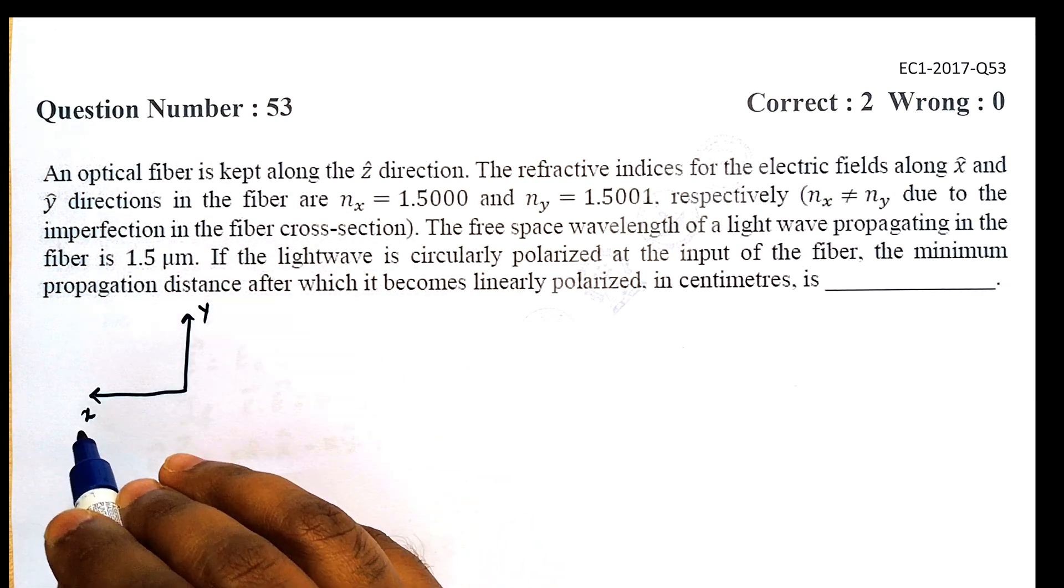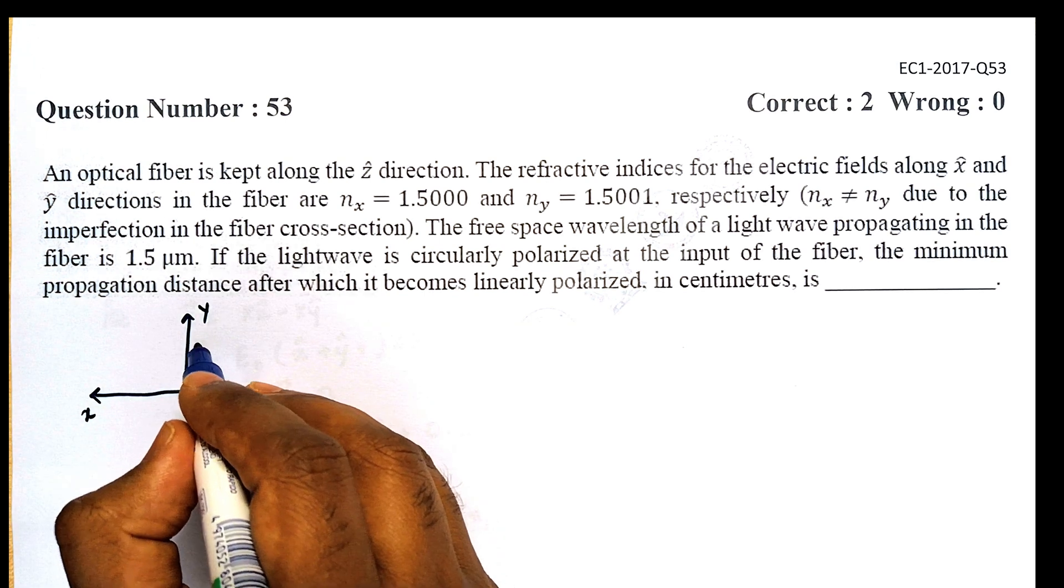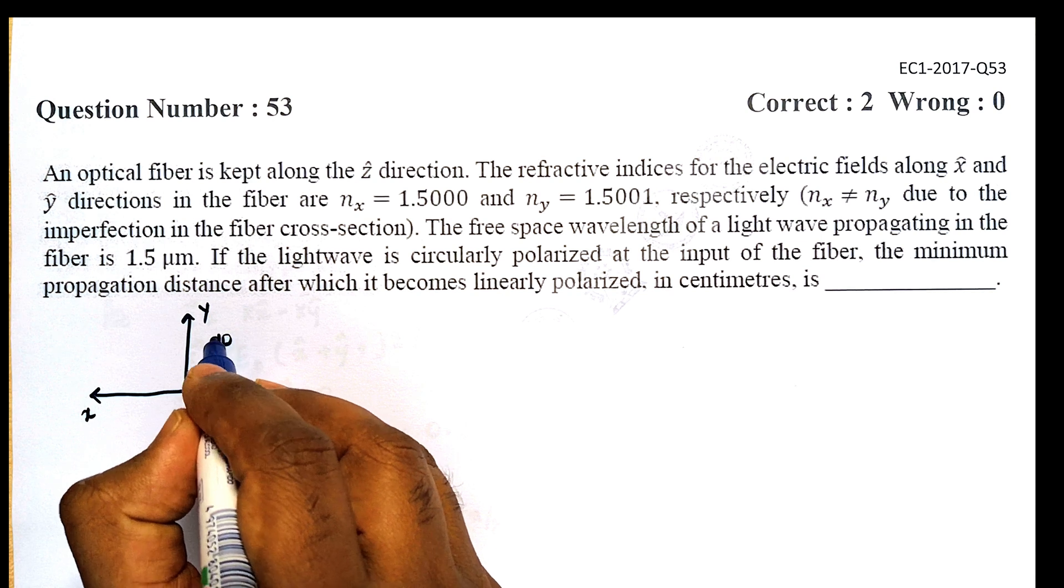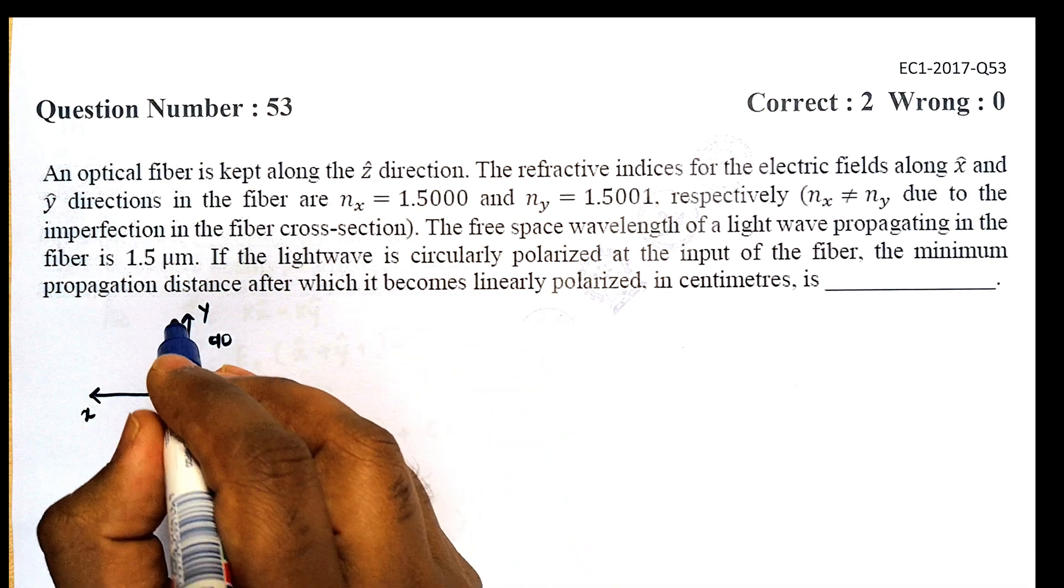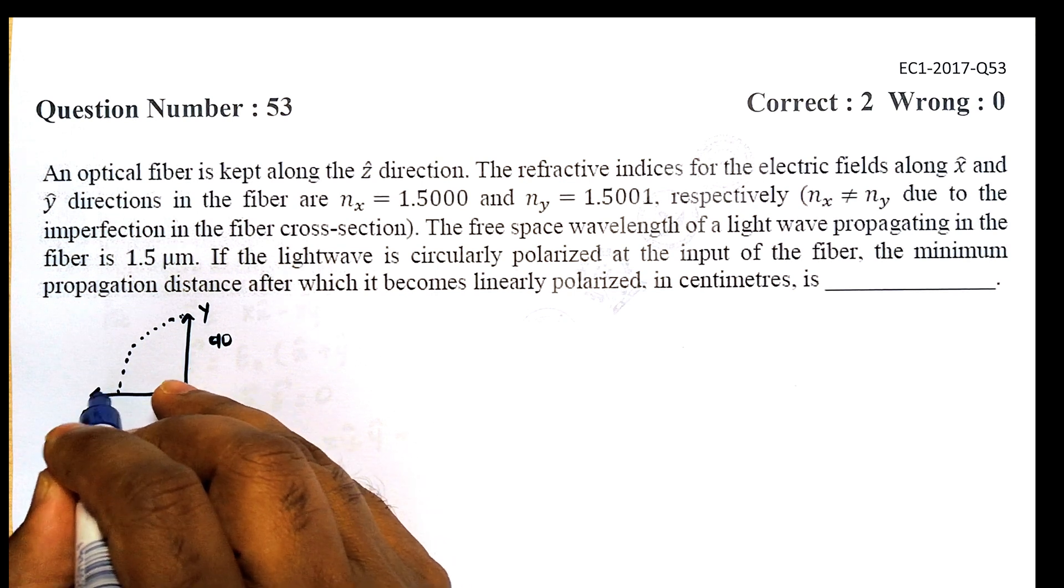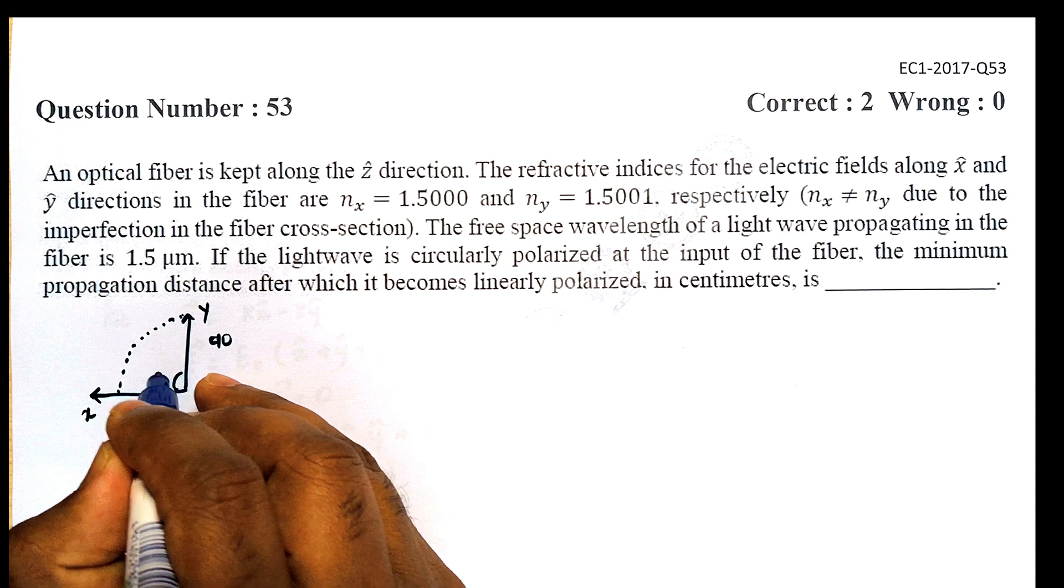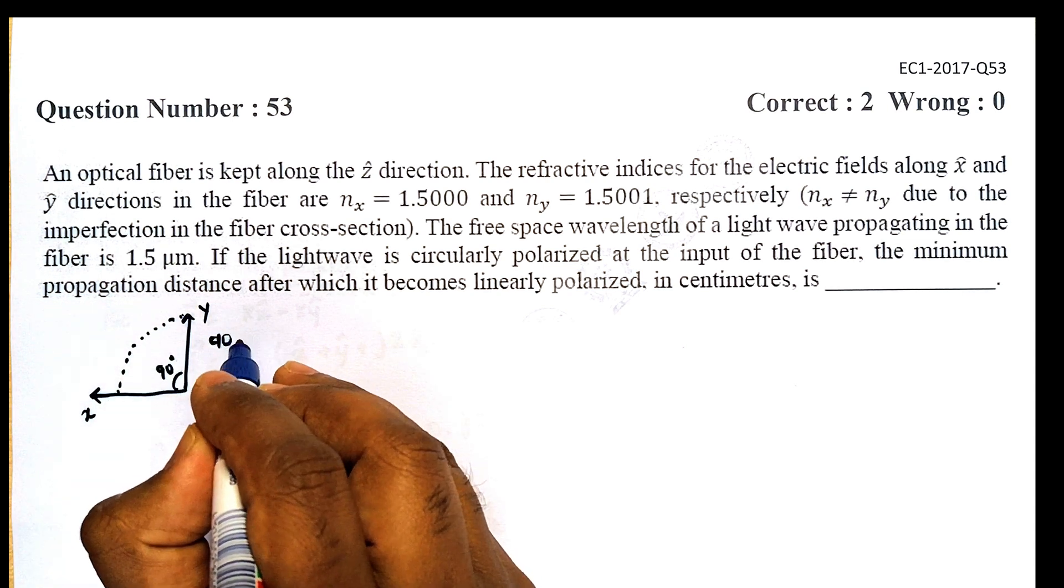electric fields along X and Y have to shift by 90 degrees for them to become linearly polarized. So the Y vector or the X vector have to shift by 90 degrees, that is π/2 in radians, for this wave to be linearly polarized.